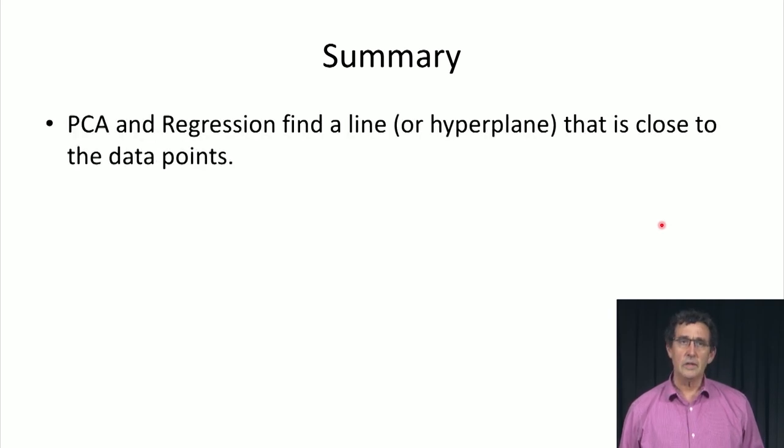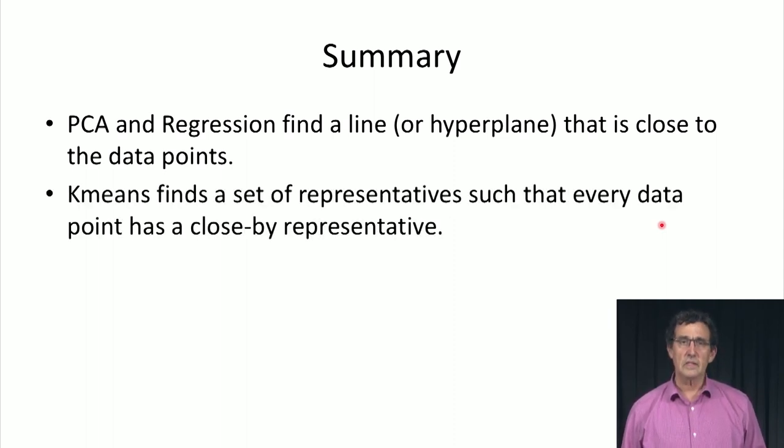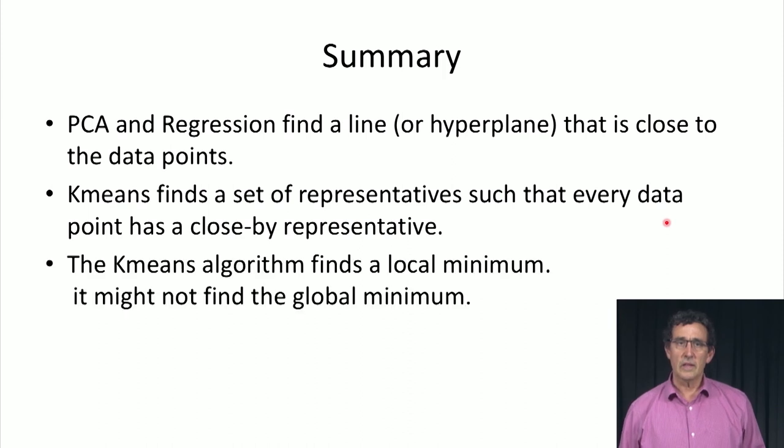To summarize, PCA and regression find a line or hyperplane that is close to the data points. K-means finds a set of representatives such that each data point has a close-by representative. The K-means algorithm finds a local minimum - a place where things don't improve anymore - but it might not find the global minimum. We'll talk about that in more detail in a few slides.